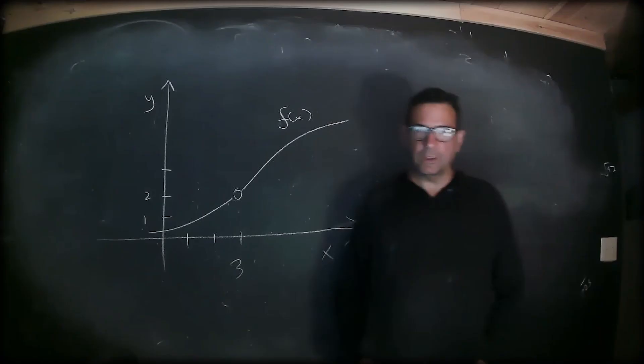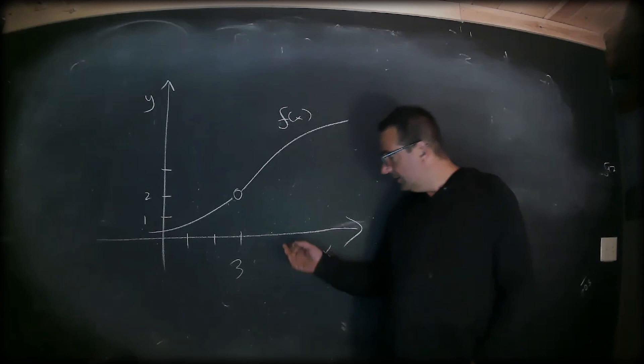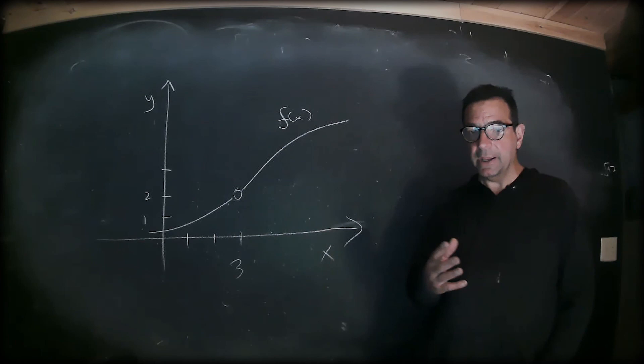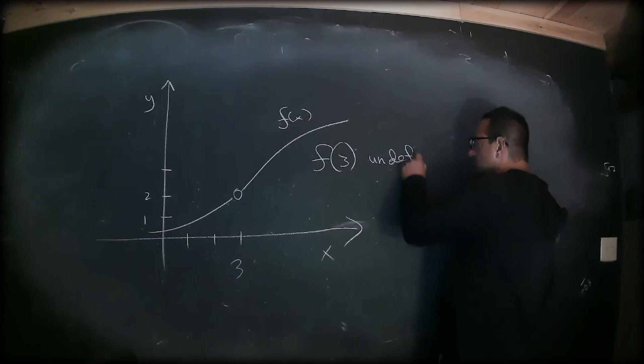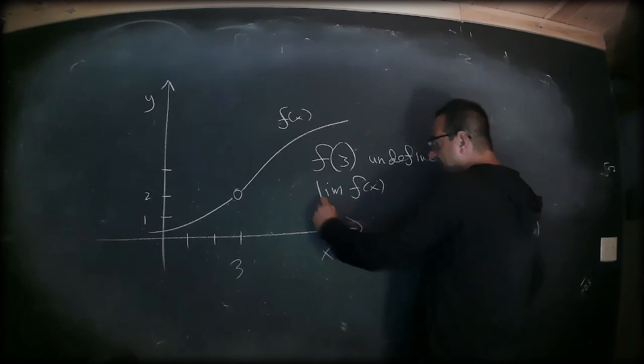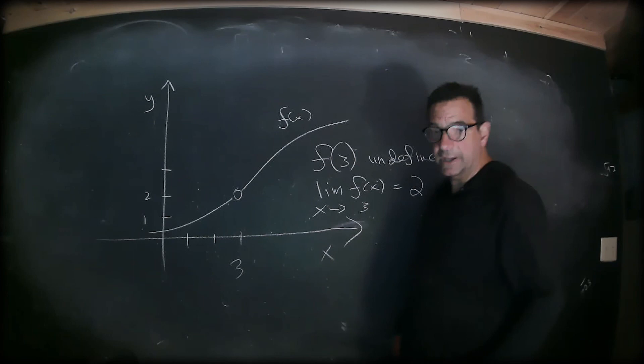Here is yet another example of a function which is discontinuous at three. This time it's because the function doesn't even exist at three — f of three is undefined — whereas the limit of f of x as x approaches three is defined and equals two, as the limit from the left equals two and the limit from the right equals two. Certainly these two cannot be equal if one of them doesn't even exist.